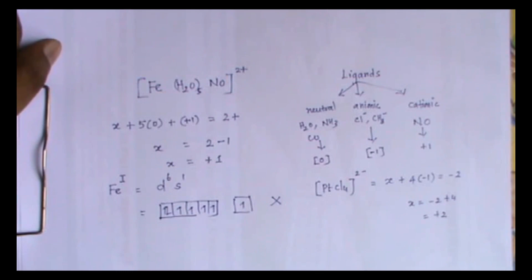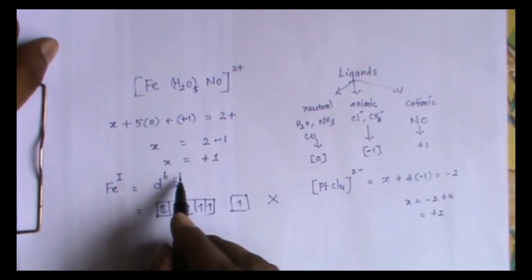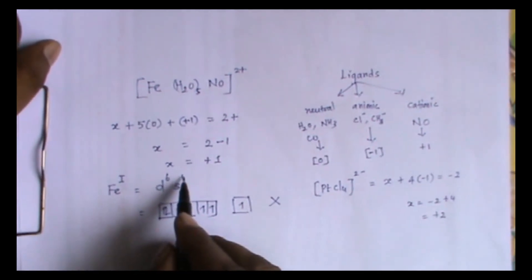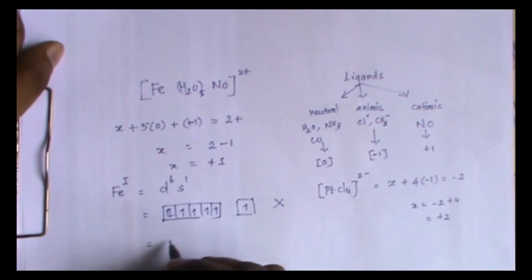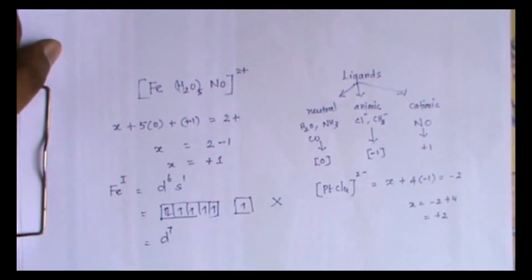In the presence of ligands, the electron whatever is present in s orbital will be shifted to d orbital. So what we get is d7 configuration.